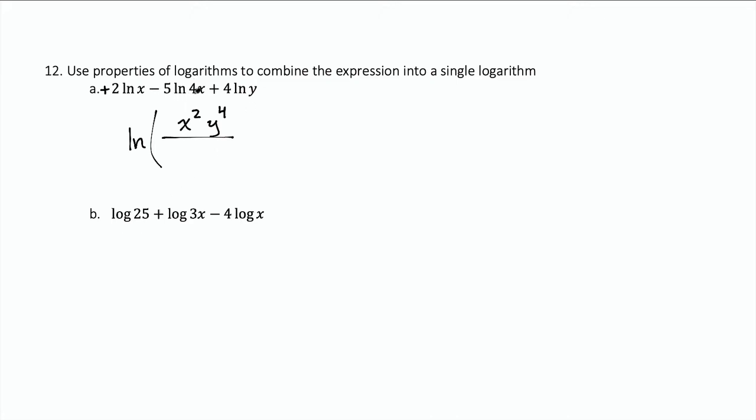I'm subtracting 5 natural log of 4x. So the 4x is going to be in the denominator, and the number in front is the exponent. So 5 is going to be the exponent on this. And you have to be careful, because that's an exponent on the entire 4x. And we'd like to simplify this, so let's go ahead and do that.